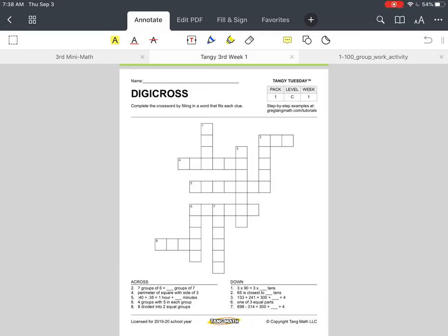Good morning. Had a few minutes and wanted to do a quick how-to video for our Tangy Tuesday DigiCross puzzle. This is the first puzzle in your packets usually, and you can see that it looks like a crossword because that's really what it is and what we're looking at here. We're going to complete this crossword by filling in a word that fits each clue.